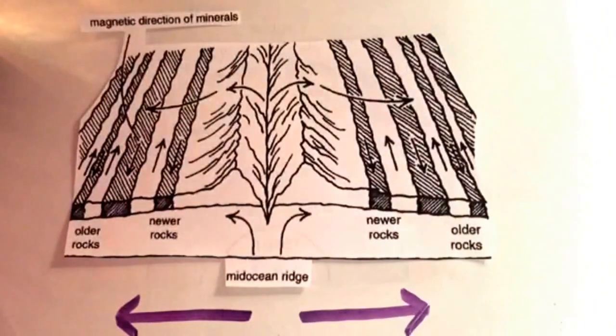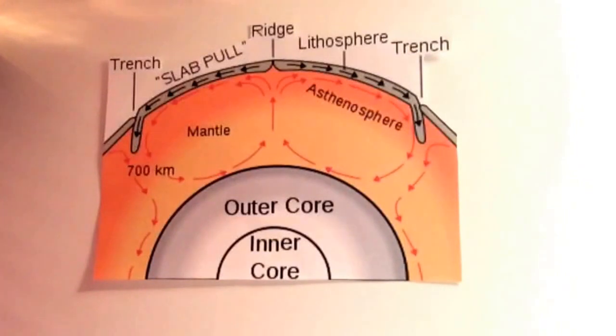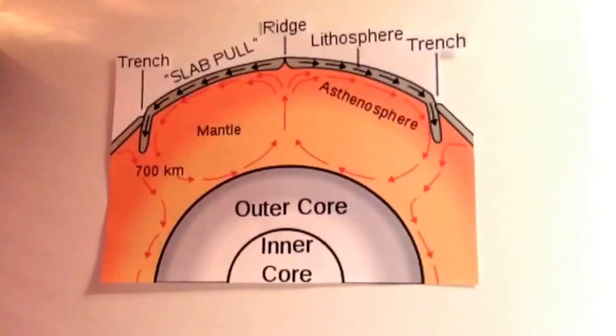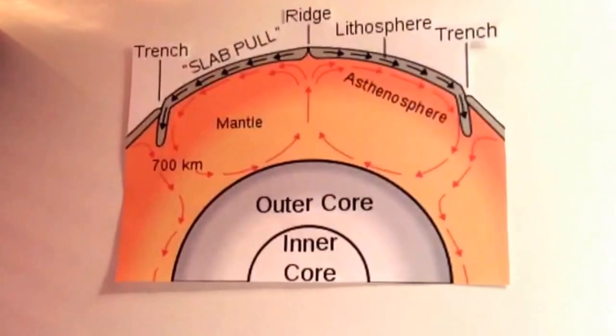Divergent boundaries move away from each other. Because of this, a gap is formed between the plates that is replaced by magma. This is known as the mid-ocean ridge. As the magma pushes its way up toward the surface, it then cools and new crust is formed.